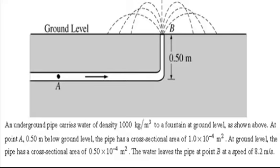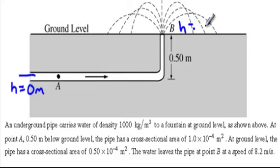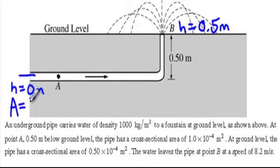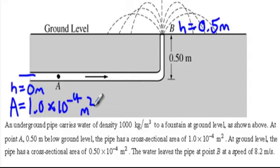The big thing we're going to want to do in every Bernoulli's principle problem is to label our diagram. They tell us something about our height. Our height at point A is zero meters — we're going to make this our frame of reference. The height at point B is 0.5 meters. We also know the cross-sectional area at point A, which is 1.0 times 10 to the negative fourth meters squared.